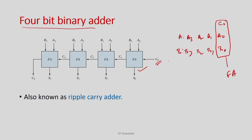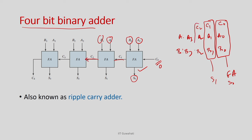The first full adder produces output S0 (the LSB) and carry out C1, which feeds into the next adder along with A1 and B1. That produces S1 and C2; C2 propagates to the next block with A2 and B2, giving S2 and C3; C3 propagates to the last block with A3 and B3, giving S3 and the final carry out C4.